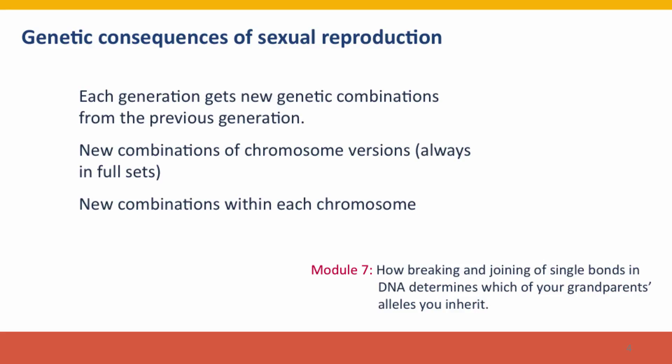There are very important genetic consequences of sexual reproduction. Not only does sexual reproduction alternate us between haploid gametes and diploid body cells, but the process of generating haploid gametes and fusing them together to give diploid cells generates new genetic combinations from the previous generation. These new combinations arise in two ways: reassortment, which creates new combinations of chromosomes, and crossing over, whereby even following a single chromosome we see different versions than were present in either parent. This will be discussed in great detail in Module 7.